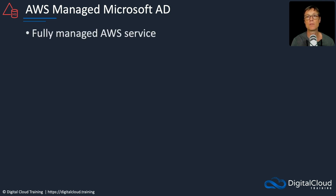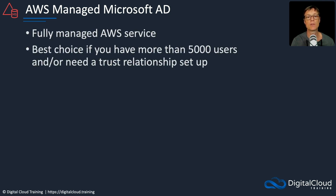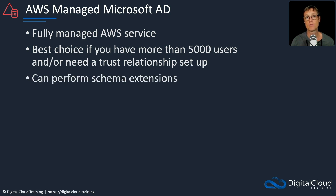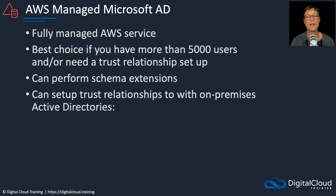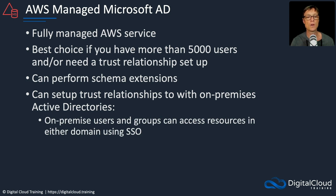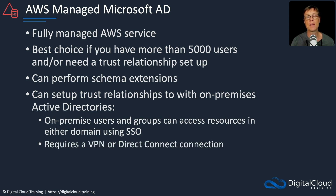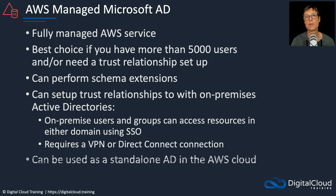Looking at some key attributes: it's a fully managed AWS service and is usually the best choice if you have more than 5,000 users, or if you need to connect another Active Directory domain using a trust relationship. You can perform schema extensions of the domain and set up trust relationships with on-premises Active Directories. When you do so, on-premises users and groups can access resources in either domain using single sign-on, which requires a VPN or Direct Connect connection. AWS Managed Microsoft AD can also be used as a standalone Active Directory in the AWS cloud.